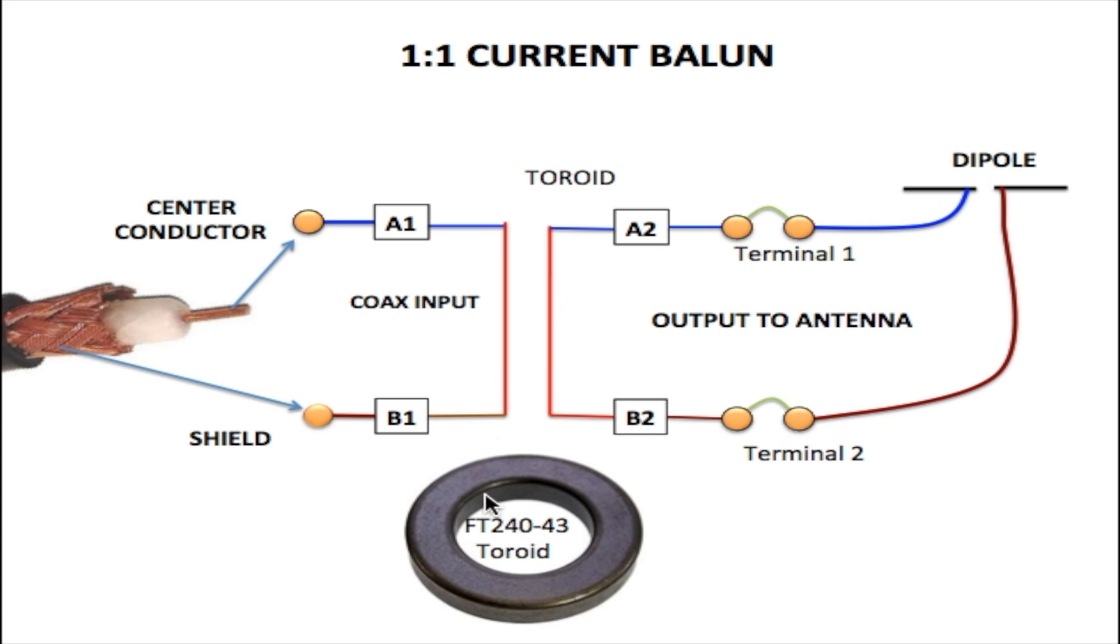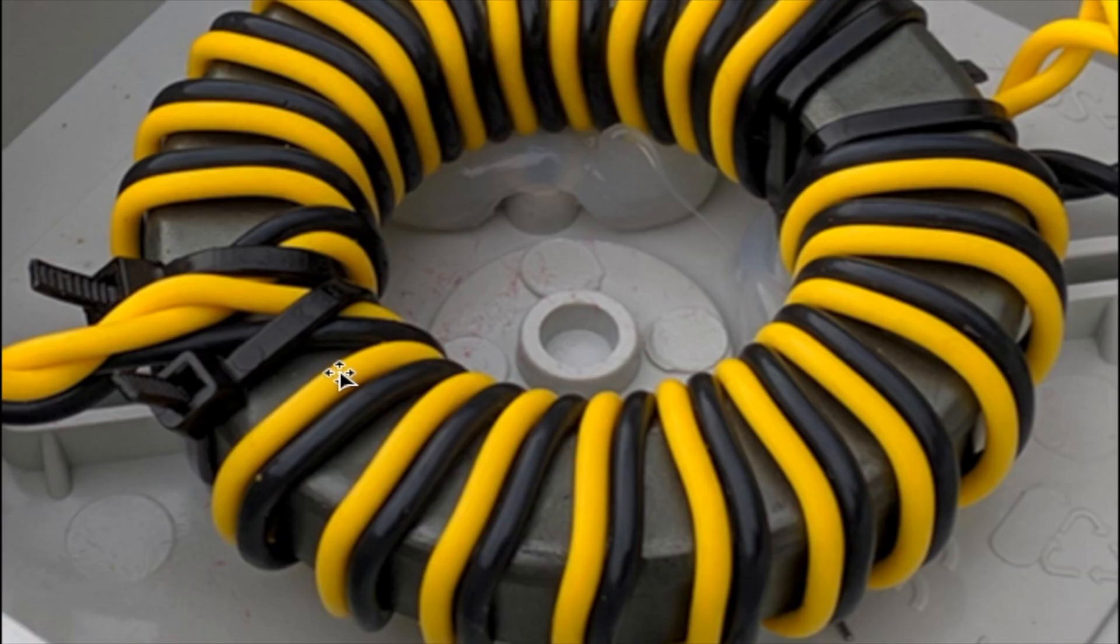Now the middle conductor of the coaxial cable is connected to A1 and the shield is connected to B1. This wire from A1 is wrapped around the toroid and so is B1. And you wrap them together like this. One of these wires are going back to your shield and the other wire is going to your middle conductor. Now these 2 wires are always close together.